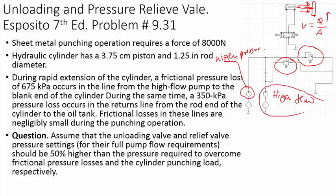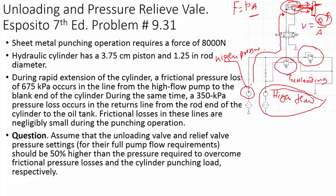This high-flow pump moves the punch towards the sheet metal. When the punch touches the sheet metal, we need very high force, which comes from high pressure. This high-pressure pump maintains very high pressure and produces high force. It doesn't create much flow because when the punch contacts the sheet metal there is no movement needed. The unloading valve then unloads all the flow, dumping it back to the reservoir.